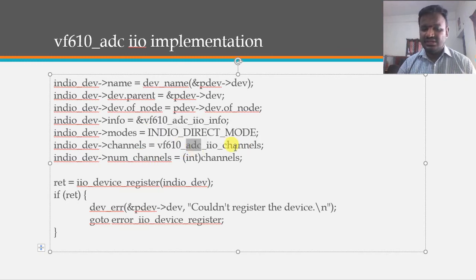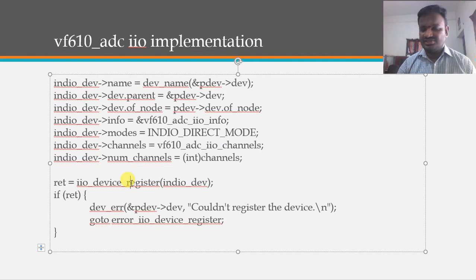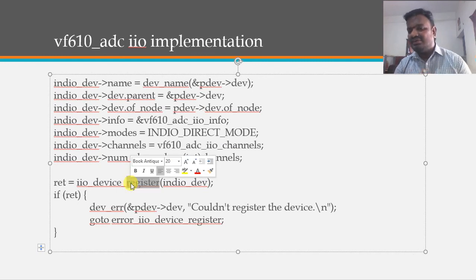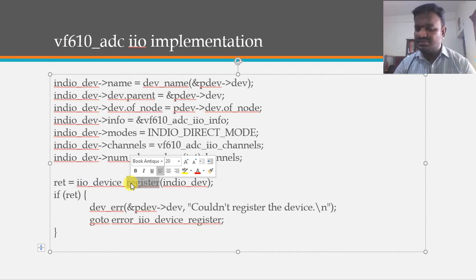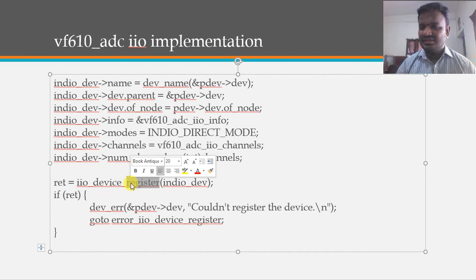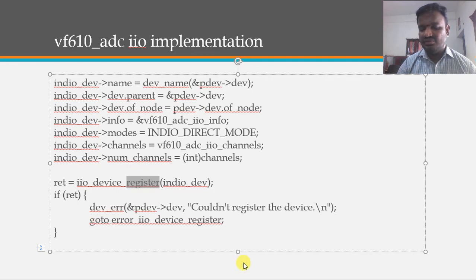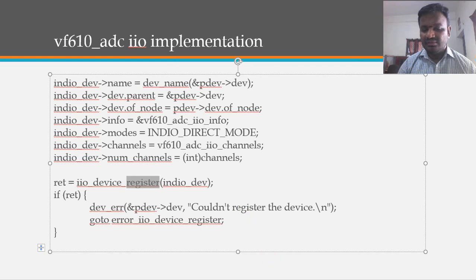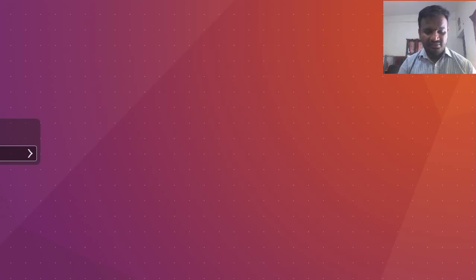Each IIO channel has the IIO channel spec, with a maximum of four channels. Registration is done, and whenever read_raw is called from user space via sysfs, that particular function gets called and returns the respective ADC data. During module removal, iio_device_unregister is called to clean up.